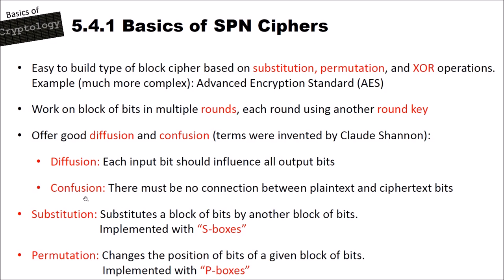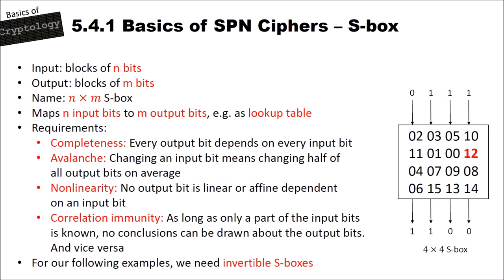An S-box inputs a block of n bits and outputs a block of m bits — we call this the n×m S-box — mapping n input bits to m output bits, for instance as a lookup table. Here's an example: you input four bits, say 0111, which is 7 (1+2+4). You look at position 7 in the table and find 12. So the S-box outputs 12, since 4+8=12.